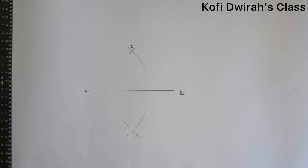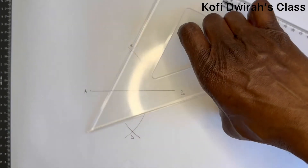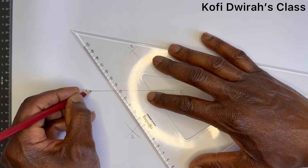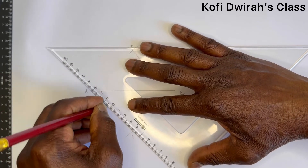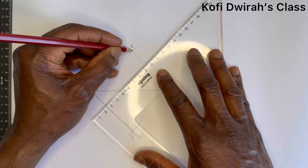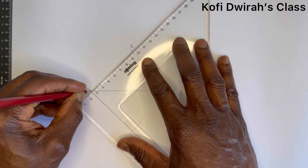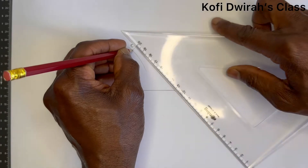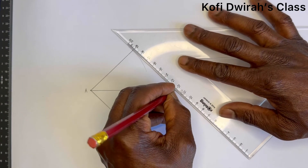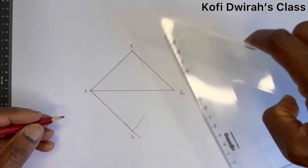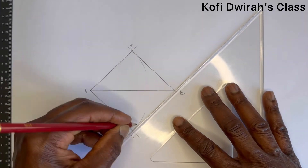Then you draw a line from point A to point D, a line from point A to point C, a line from point C to point B, and another line from point B to point D.